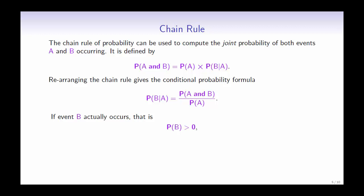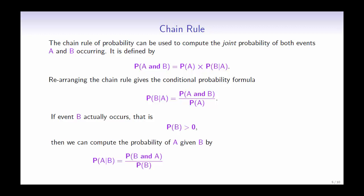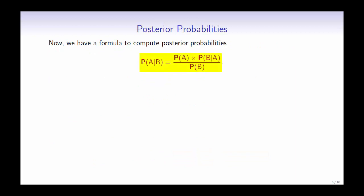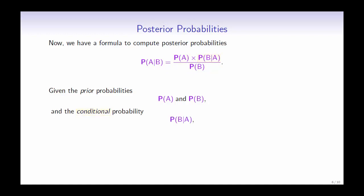In the event that B actually occurs — in other words, B is not zero — we can compute the probability of A given B. From the conditional probability formula, the probability of A given B equals the probability of B and A divided by the probability of B. The probability of B and A is the same as the probability of A and B. Using the chain rule, we can rewrite this as the probability of A multiplied by the probability of B given A divided by the probability of B. This gives us a formula to compute posterior probabilities: given the prior probabilities of A and B, and the conditional probability of B given A, we can compute the posterior probability, the probability of A given B.